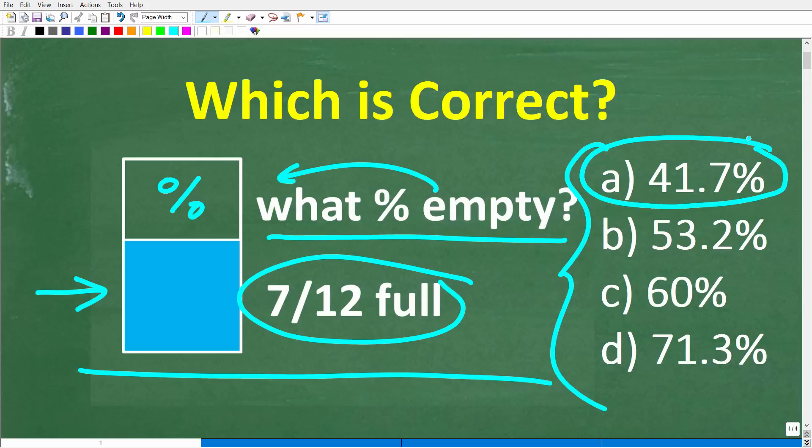Now we do have a multiple choice question here. So A is 41.7%, B is 53.2%, C is 60%, and D is 71.3%. Now feel free to use a calculator. But if you could figure this out, go ahead and put your answer into the comment section. I'll show you the correct answer in just one second, and then I'm going to walk through exactly how to solve this problem step by step.